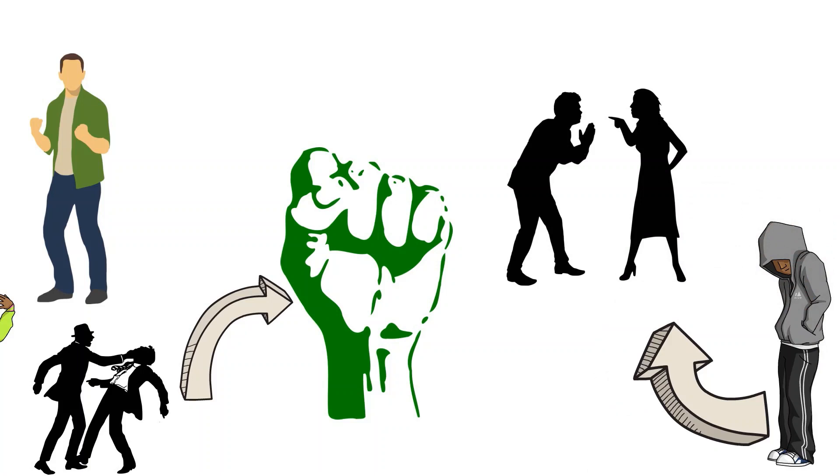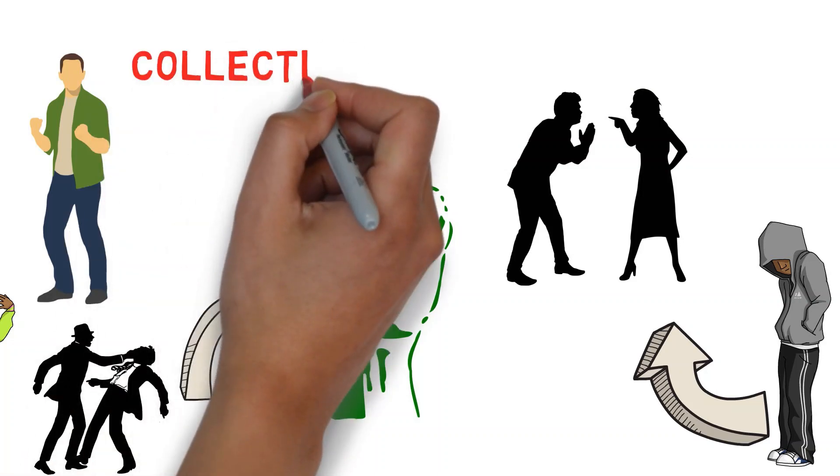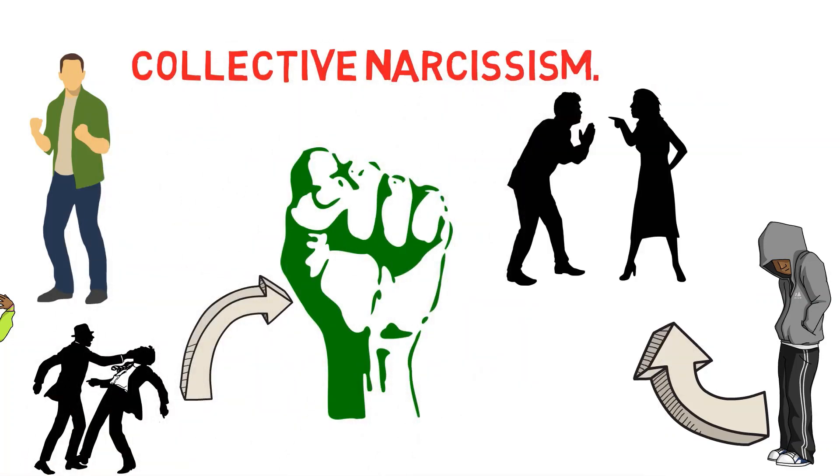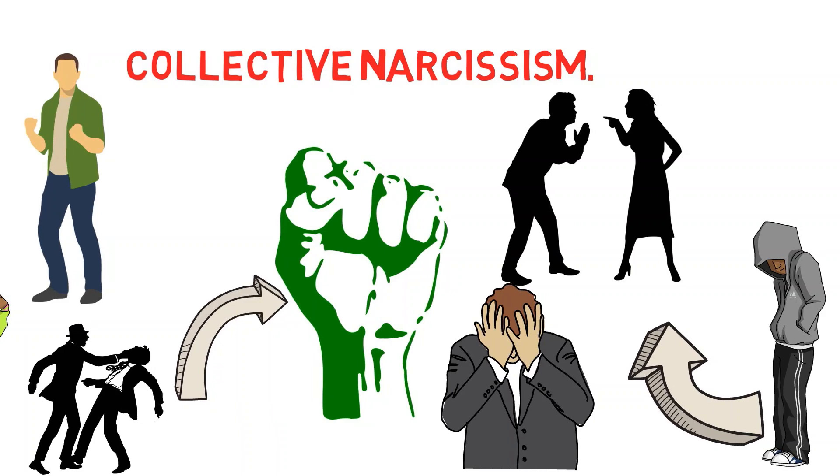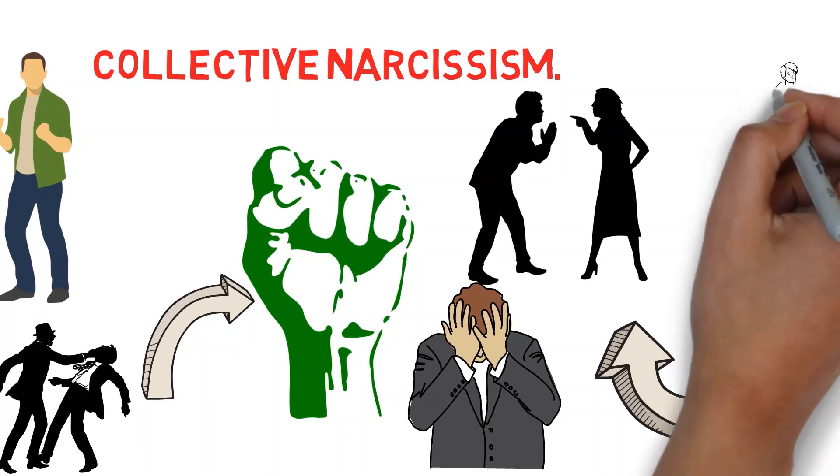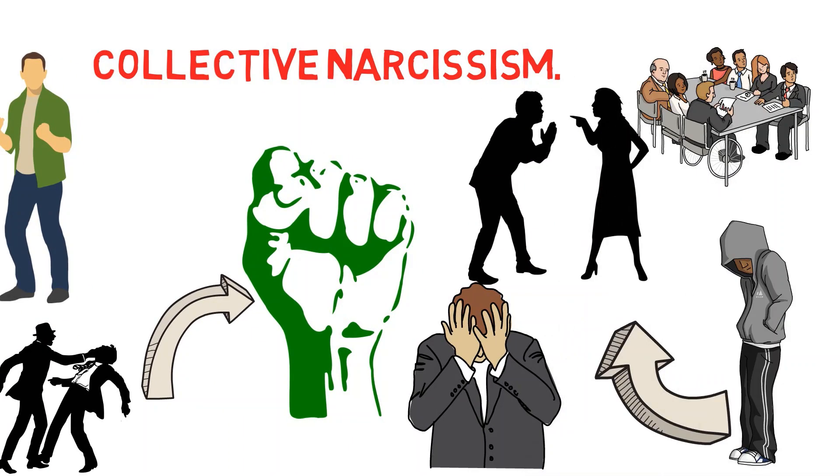The belief in conspiracies is also rooted in what is referred to as collective narcissism. This is the belief that your own social group is better, yet less appreciated by other people. People who feel that they or their social group have been victimized are also less likely to believe in government institutions, and more likely to believe in conspiracies.